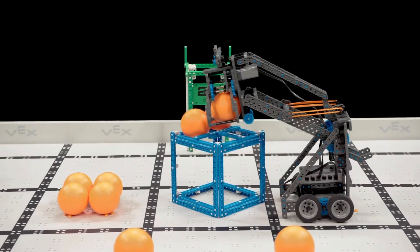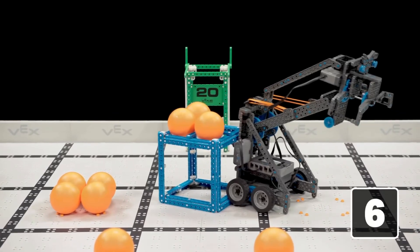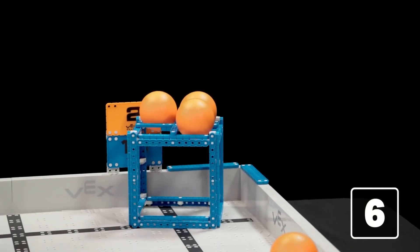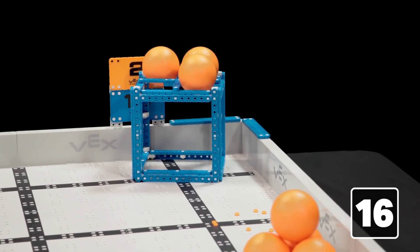So, if a robot places 3 balls on top of a cube, that alliance has just earned 6 points. Then, if they score that cube in a scoring zone, they have just earned 10 more points. That's a total of 16 points.